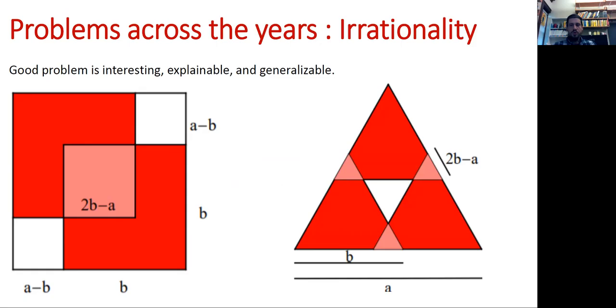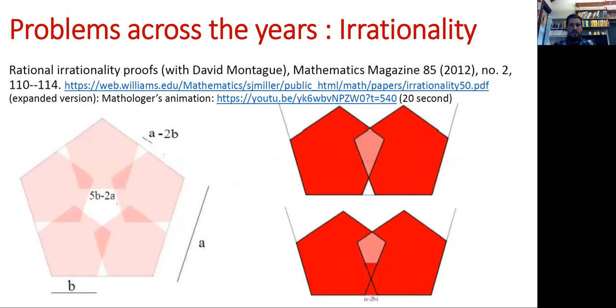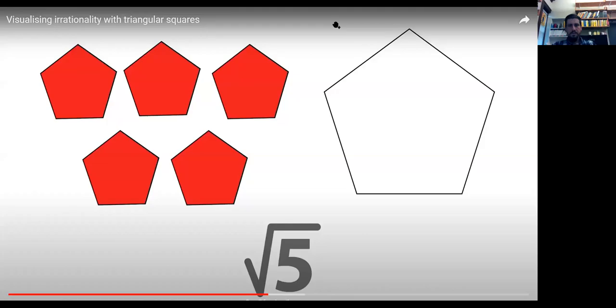You can do this with other shapes. You can do this with other numbers. And so you can do the square root of three is irrational by looking at triangles. And you see these three pink areas are each double counted, the white area is missed. And so I asked my students, how far can you push this? And one of my students, David Montague, was able to show that you can actually extend this to pentagons. And there is a beautiful proof of this, or an illustration of this, by the mathologist, which I'm going to show right now.